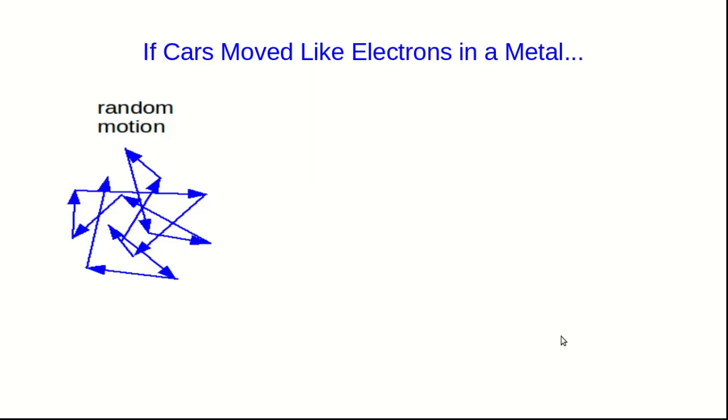It's hard to picture that motion of electrons. And so maybe it's useful to go back to the car analogy. What if cars moved the way electrons do in a metal? Well, this would mean you would get onto the highway and you would be executing very fast, random motion. And the highway is full of, say, concrete pylons that you are ricocheting off.